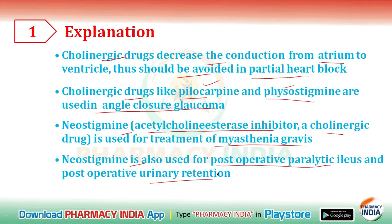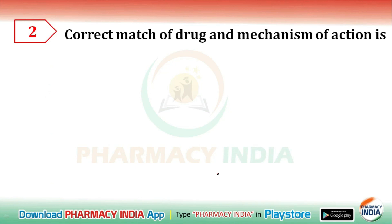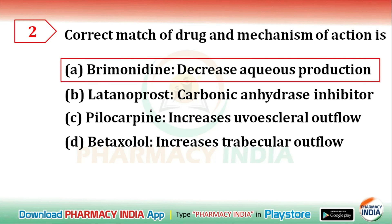The next question is: correct match of drug and mechanism of action. The options are: brimonidine — decrease aqueous production; latanoprost — carbonic anhydrase inhibitor; pilocarpine — increase uvoscleral outflow; betaxolol — increase trabecular outflow. The correct answer is brimonidine — decrease aqueous production.